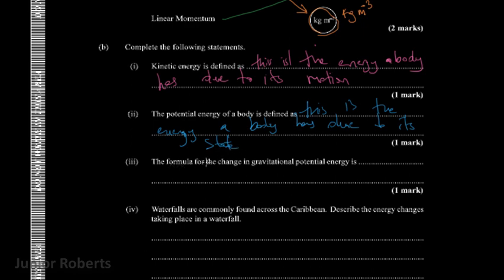Now they want us to write a formula for the change in gravitational potential energy, and that formula is given as EP equals mgh, where EP is our change in potential energy, m is our mass, g is the gravitational field strength, and h is our height.